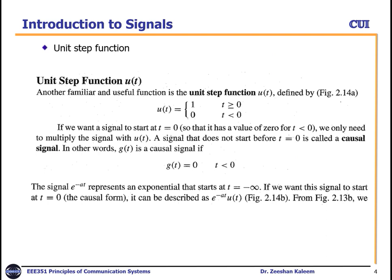The next topic is the unit step function. The unit step function has an amplitude of one when time is greater than or equal to zero, and zero when t is less than zero. So on the time axis, u(t) equals one for t greater than or equal to zero and zero otherwise. If we want a signal to start at t equals zero — having a value of zero for t less than zero — we only need to multiply the signal with u(t).